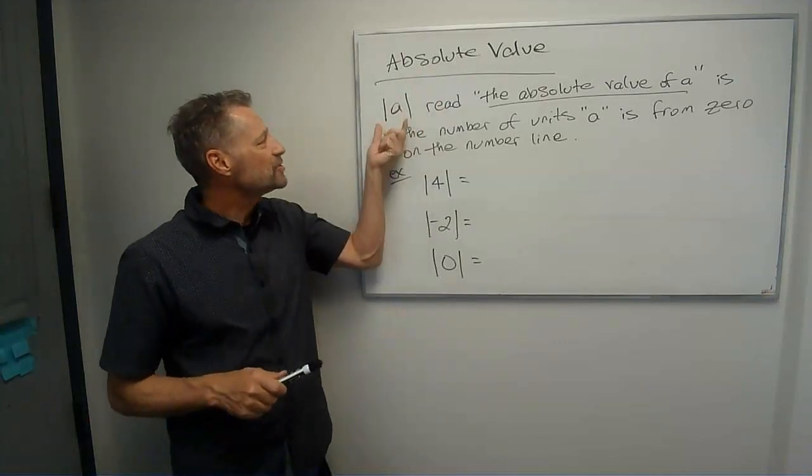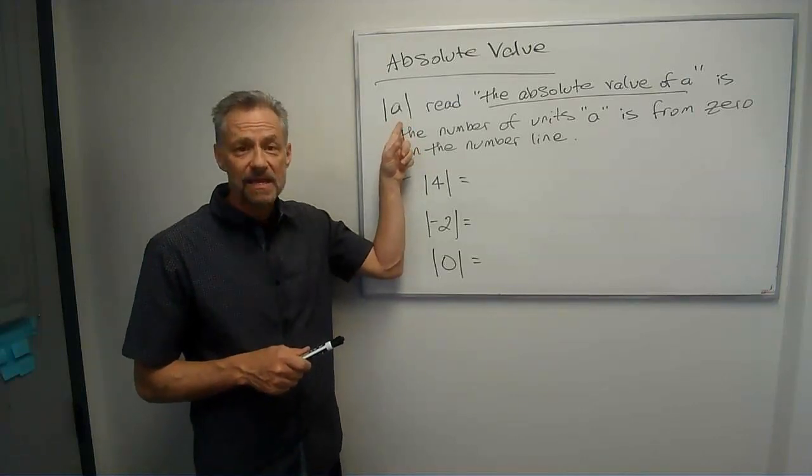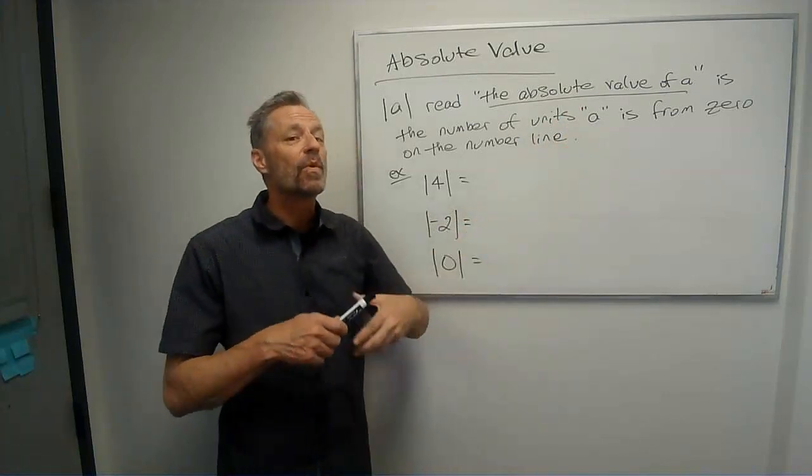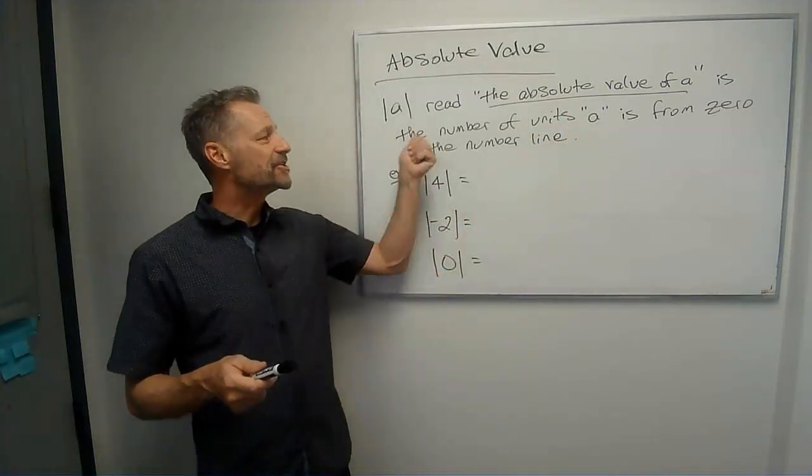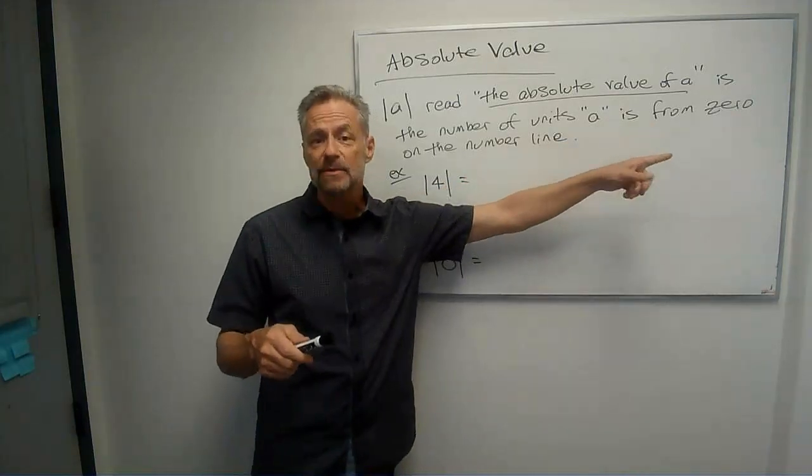So for an absolute value, we write it this way. We have two straight lines, and in the middle of it, in this case we have an A. Well, this is read as the absolute value of A. And what it represents is the number of units A, whatever's in there, is from zero on the number line.